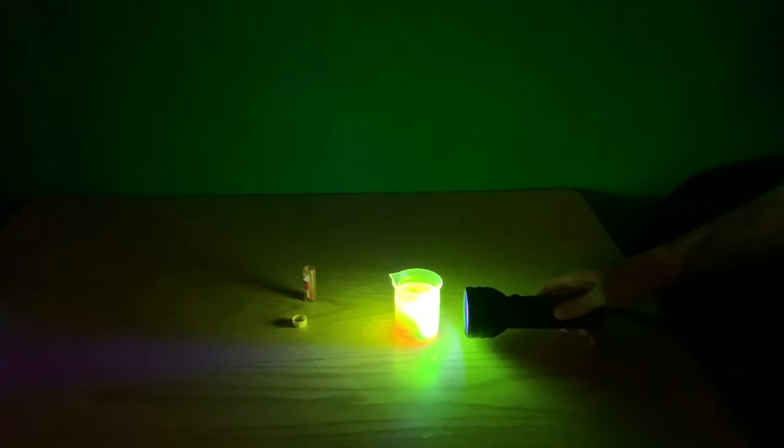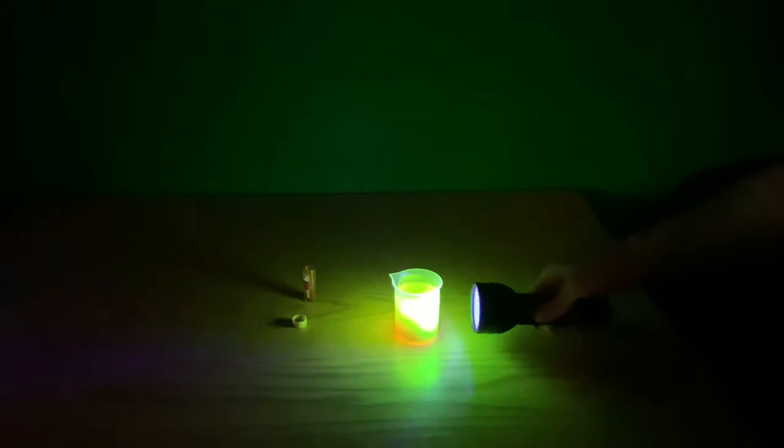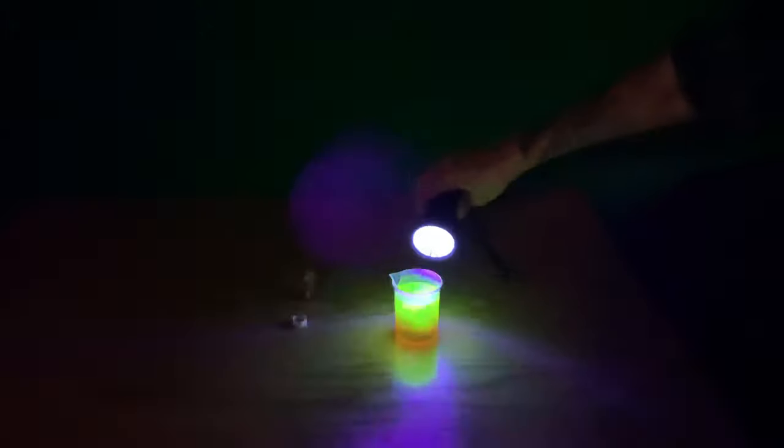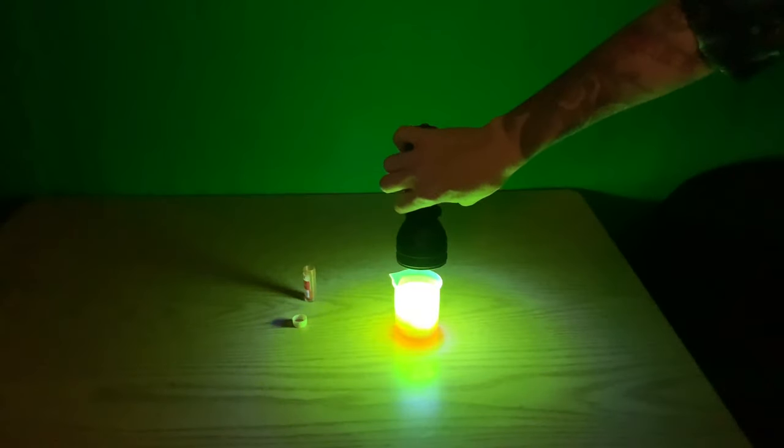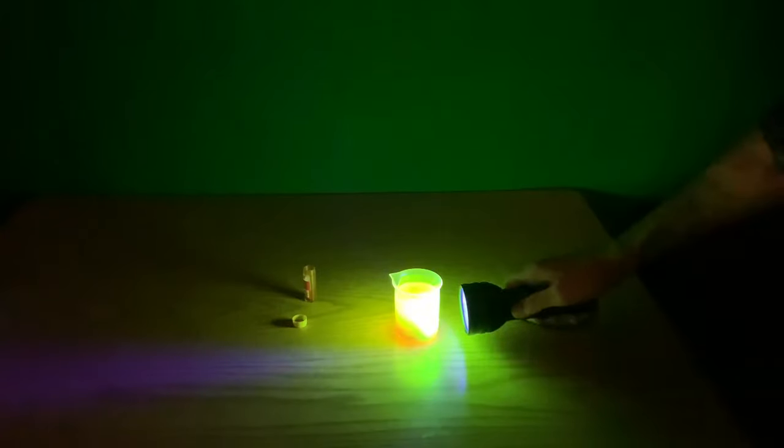Now, one of the things you'll notice with this fluorescence is that when I turn off the UV light, there's no more glowing. The glowing only happens when the light is on. But we are going to look at one more type of fluorescence that's a little different.